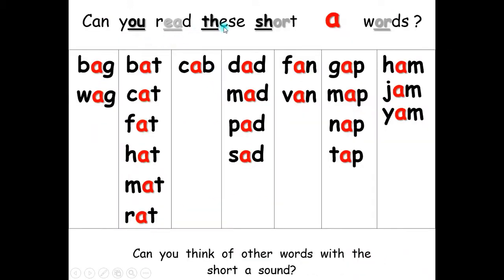Can you read these short A words? B-A-G — bag. W-A-G — wag. B-A-T — bat. C-A-T — cat. F-A-T — fat. H-A-T — hat.